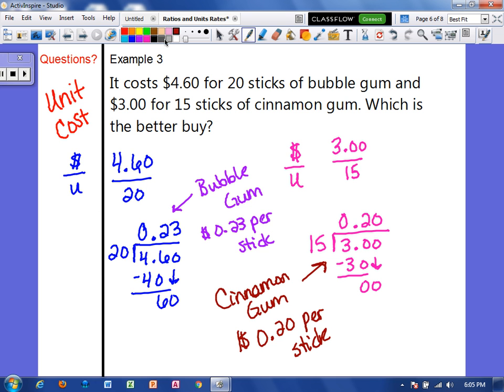So if we wanted the better buy, we would want to go with whatever was cheaper. So that means that the cinnamon gum is going to be the better buy.